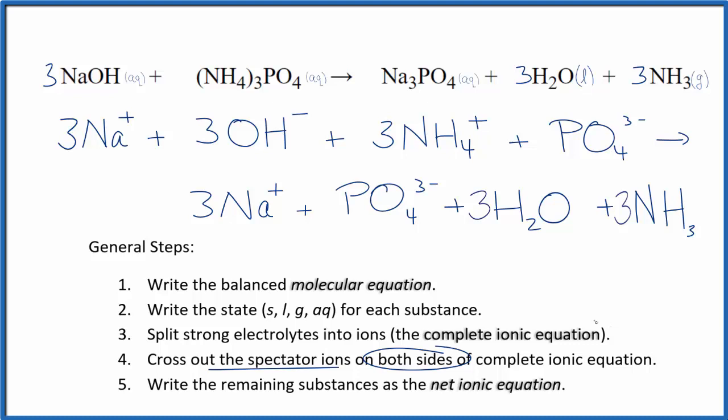Now we can cross out spectator ions - they're on both sides of the complete ionic equation. In the reactants we have three sodium ions, and in the products we have spectator ions - cross them out. In the reactants we have the phosphate ion, we have it again in the products - cross that out, it's a spectator ion.